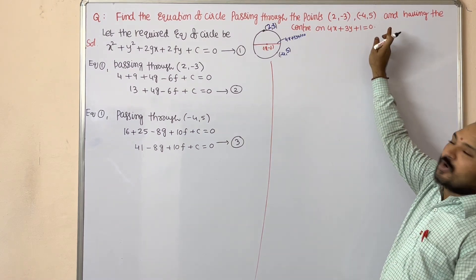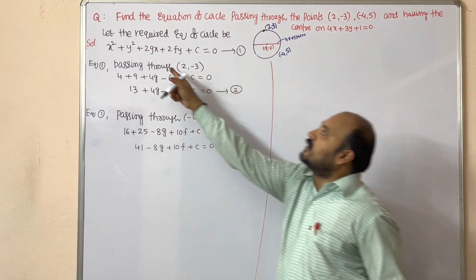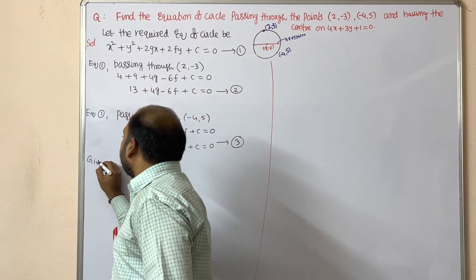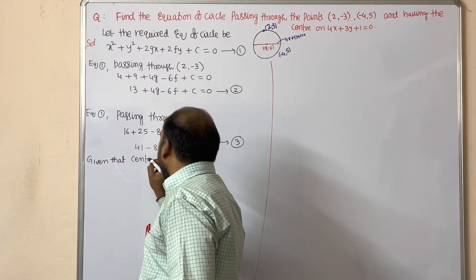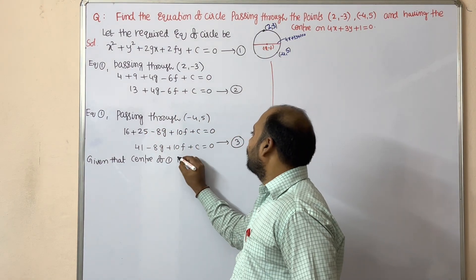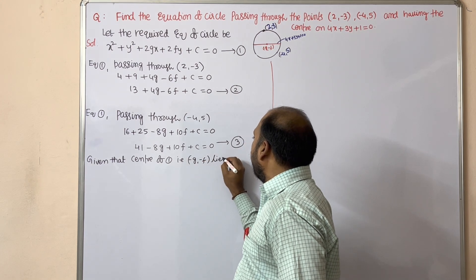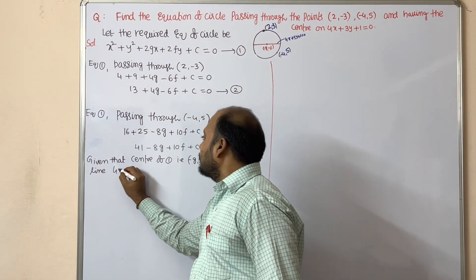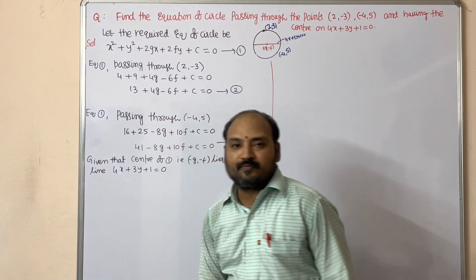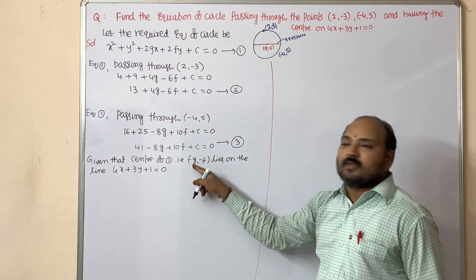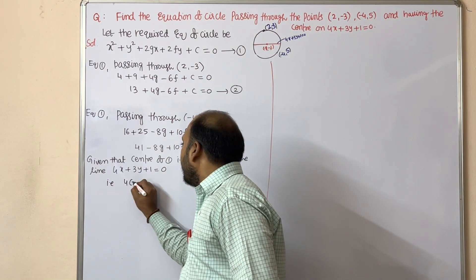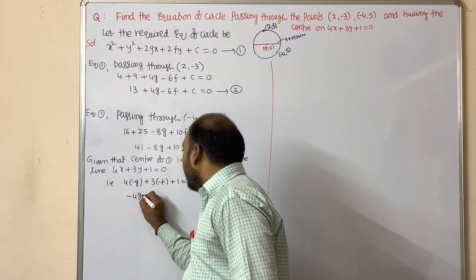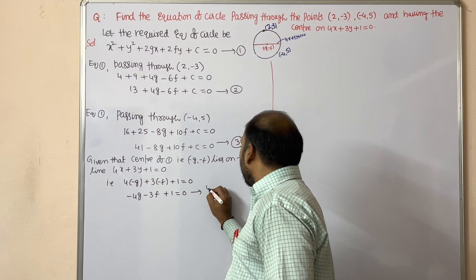Keep that as equation 3. The third condition is that the center of the required circle, (-g, -f), lies on the line 4x + 3y + 1 = 0. Substituting x = -g and y = -f into the line: 4(-g) + 3(-f) + 1 = 0, which gives -4g - 3f + 1 = 0. This is equation 4.